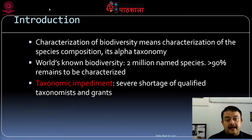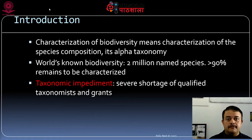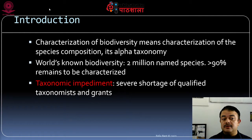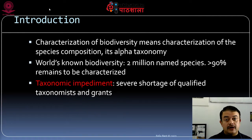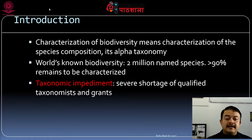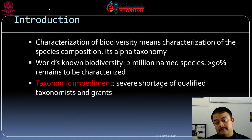Characterization is called alpha taxonomy or alpha biodiversity — the species-level changes in taxonomy, the constituents of biodiversity. The world's known biodiversity is around 2 million named species, and more than 90% remains to be characterized. And that figure covers only eukaryotes; if we include prokaryotes it becomes far larger — around 10 million.